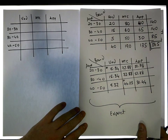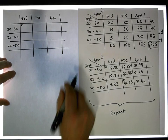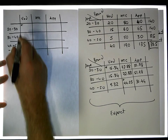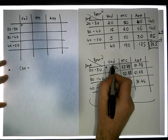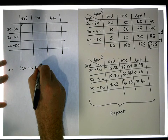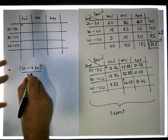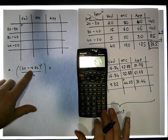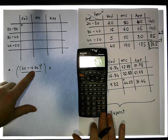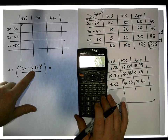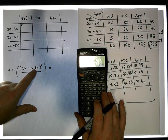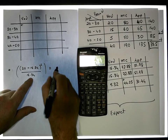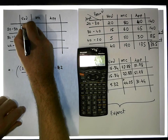Let's do this cell — call it cell star. The observed is 20. So for cell star it's (20 minus 15.34) squared, divided by 15.34. Calculating: 20 minus 15.34 gives us 4.66; squaring that gives 21.7476; dividing by 15.34 gives us 1.42.